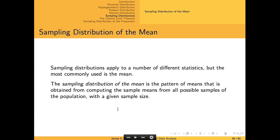The notion of a sampling distribution can be applied to various characteristics of a population, but we will primarily be interested in the sampling distribution of a mean, which is obtained from taking the means of several samples of the same size.